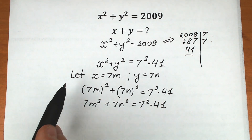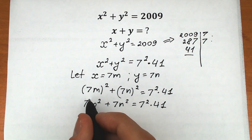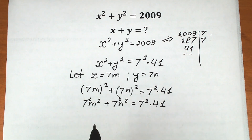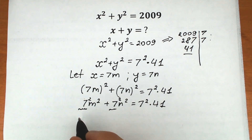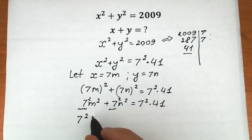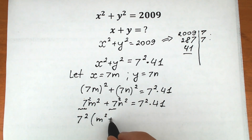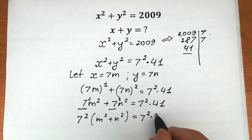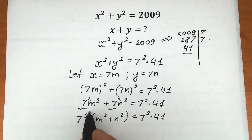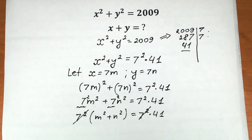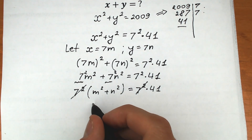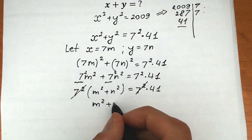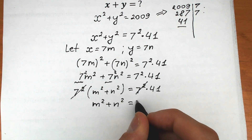That's why I used this substitution — because we have 7² on both sides. We can factor out 7² on the left, giving 7²(m² + n²) = 7² × 41, and then cancel 7² from both sides. The result is m² + n² = 41.